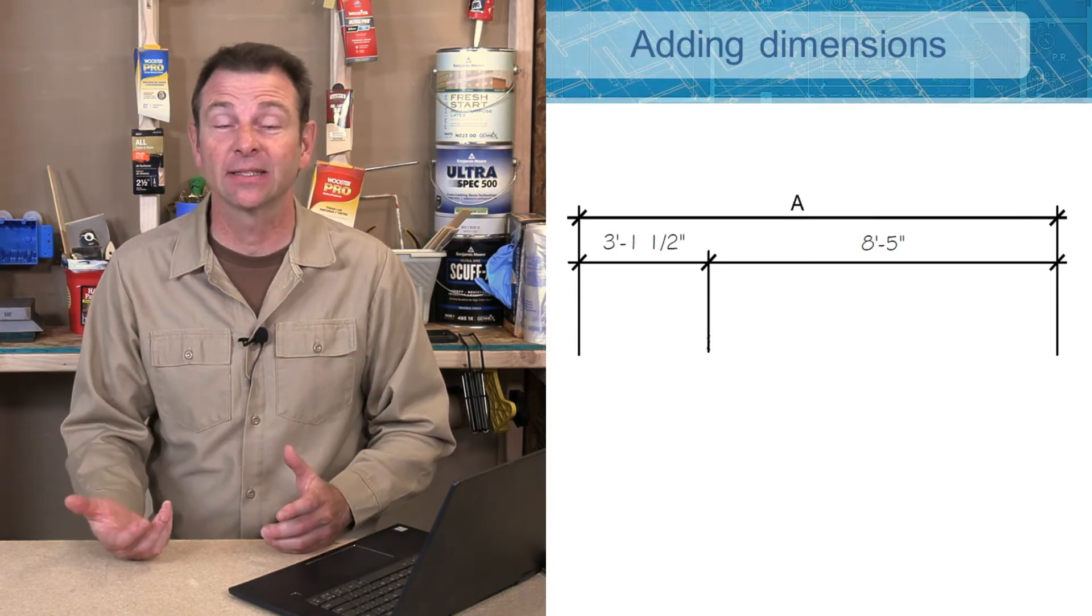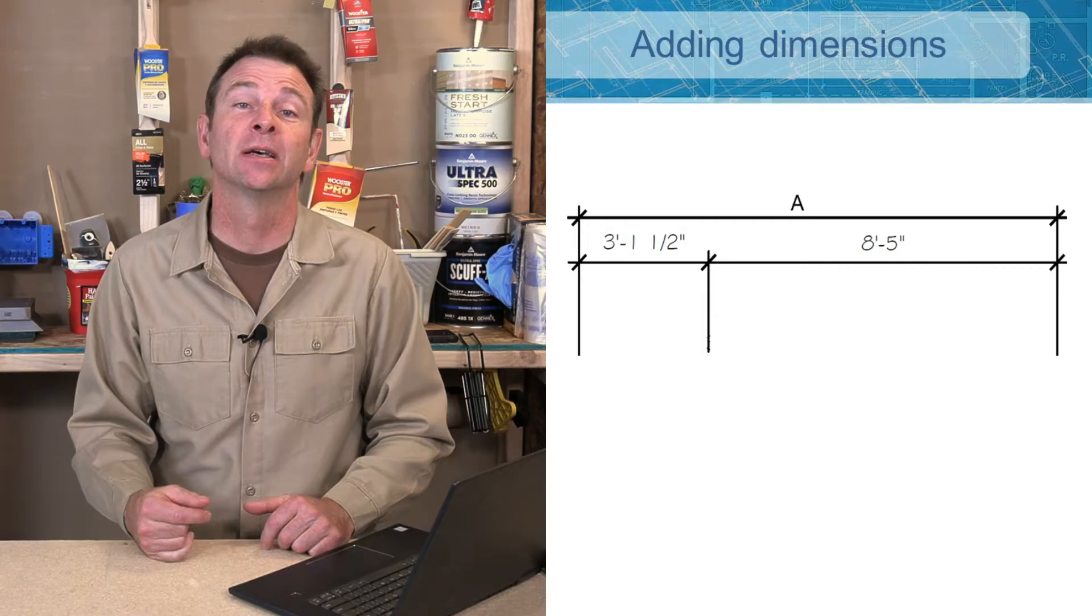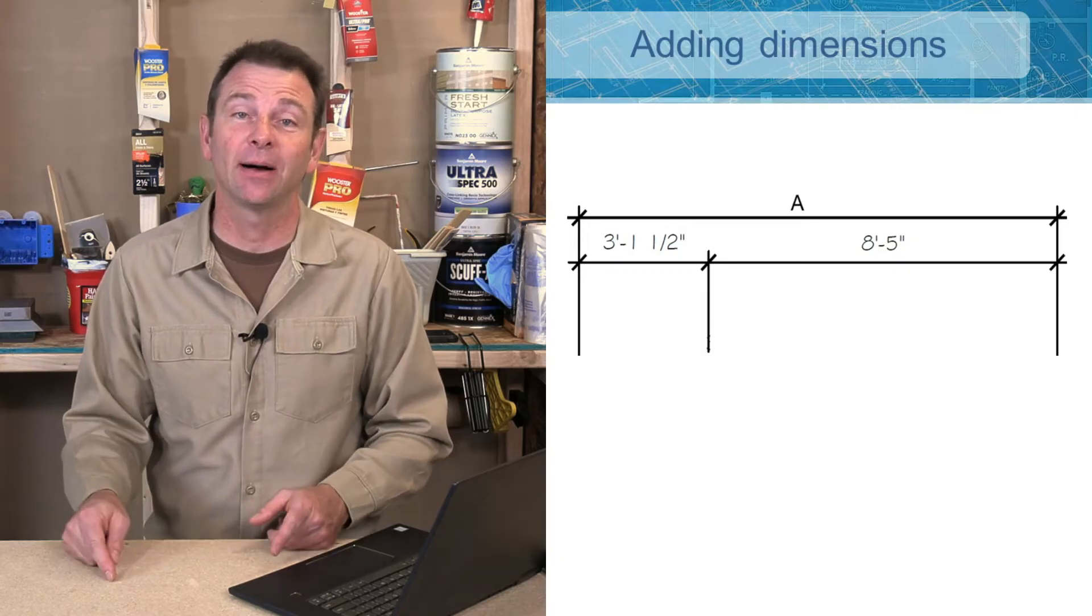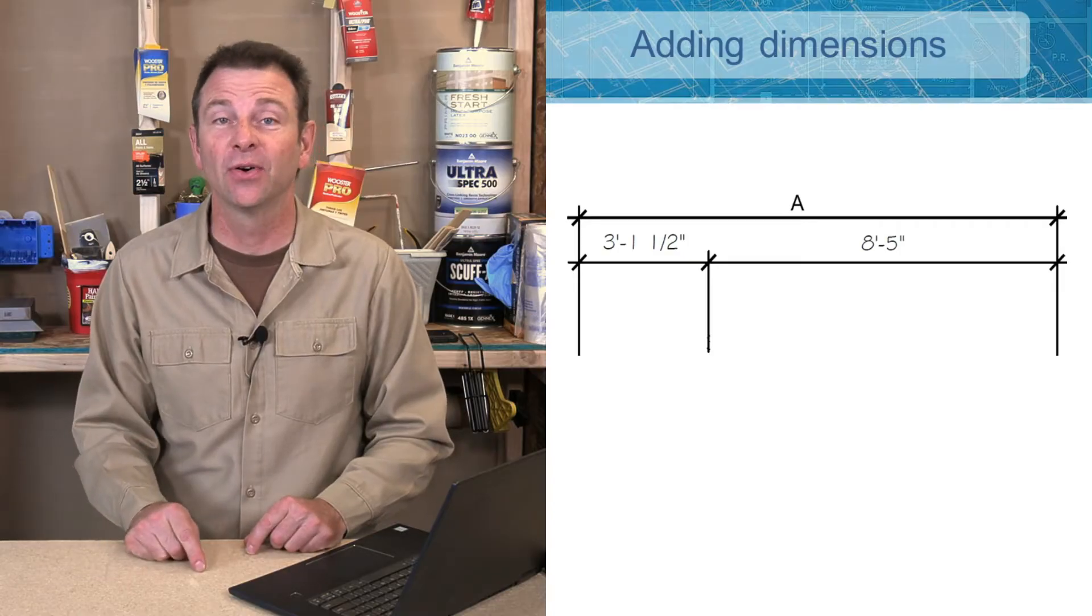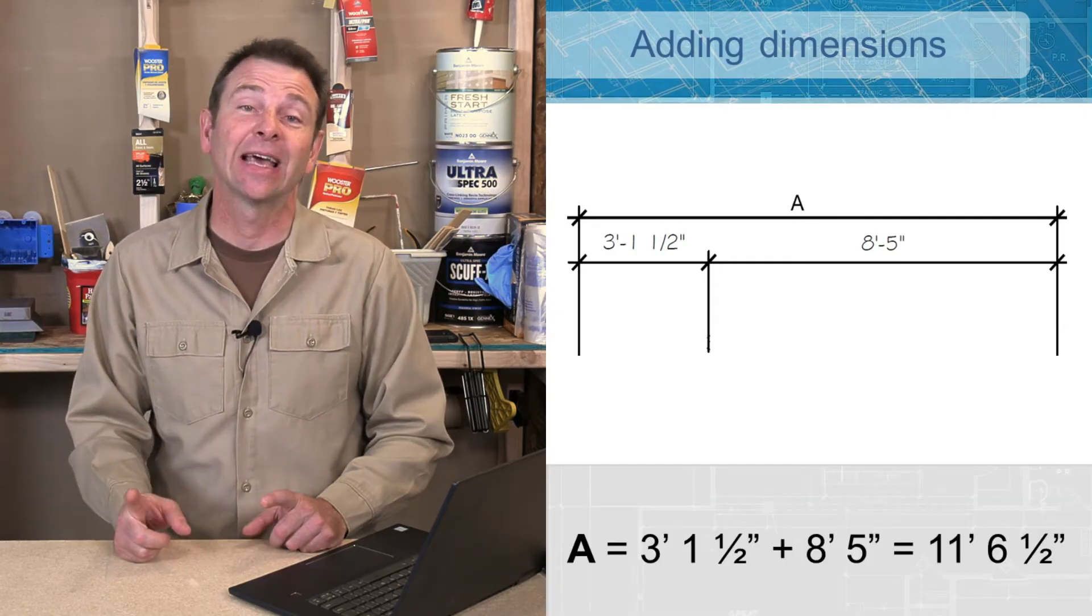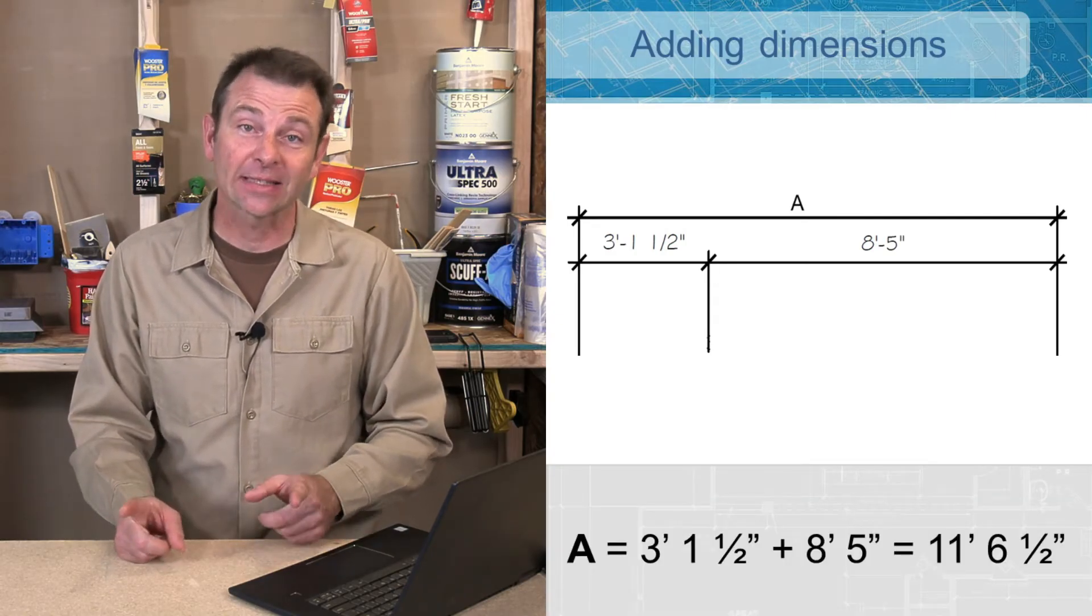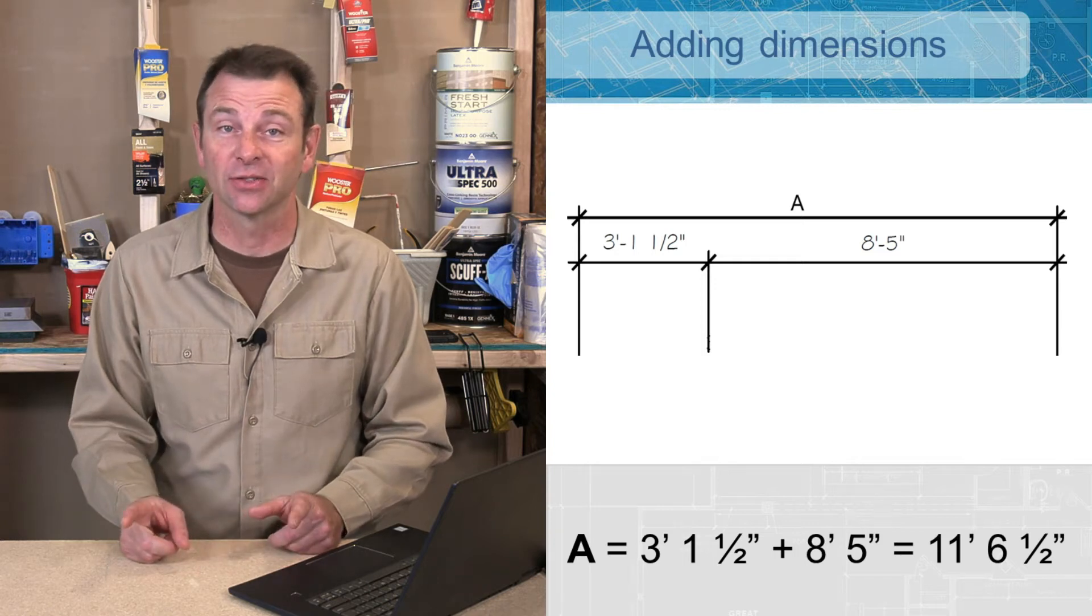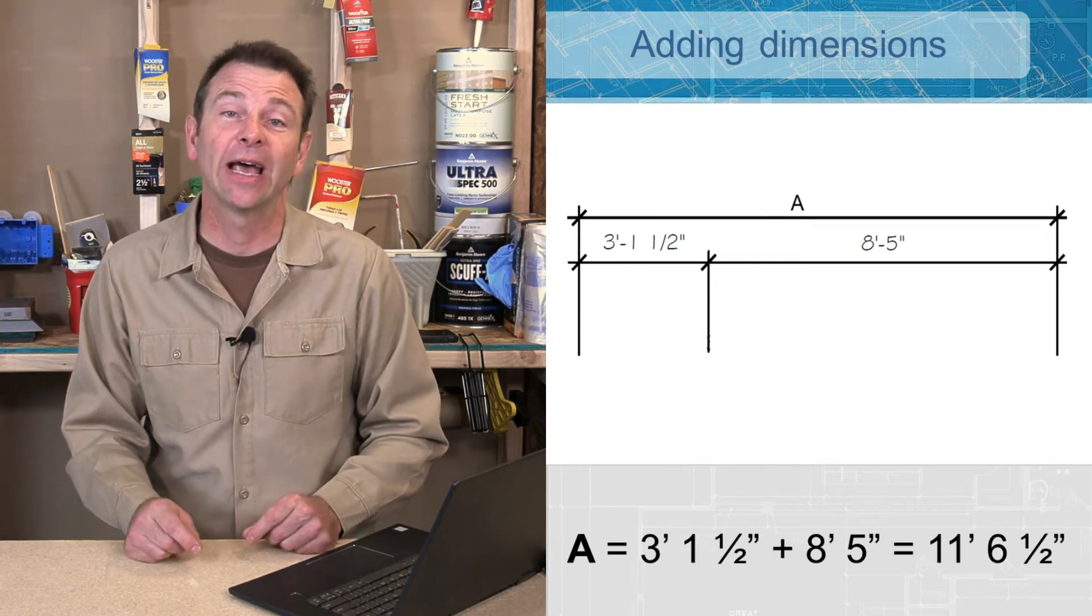We need to know what the total is. You see A would be a combination of the 3 foot 1½ inches plus the 8 foot 5 inches. To add these two together, you can actually do this in your head. You might be using a construction calculator.